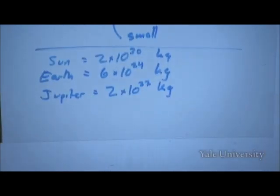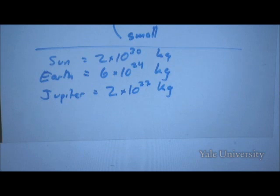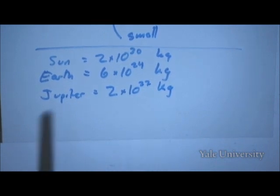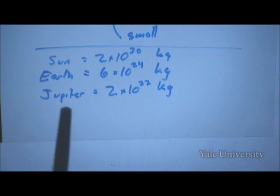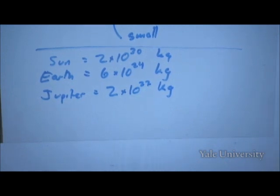The Sun moves a thousand times less because of Jupiter than it does because of the Earth. The Sun actually responds to all of these planets, so it's executing some complicated motion which is the sum of the motions induced by all the planets. But Jupiter is significantly more massive than the rest, so by far the dominant motion that the Sun goes through has to do with the orbit of Jupiter.